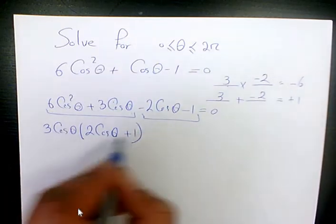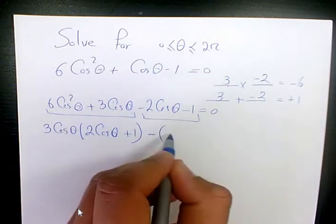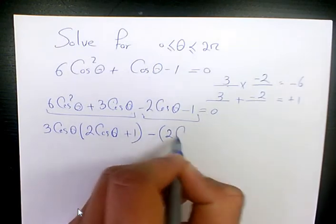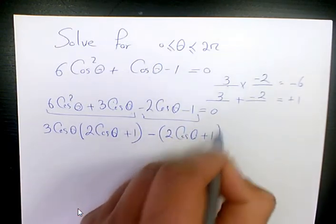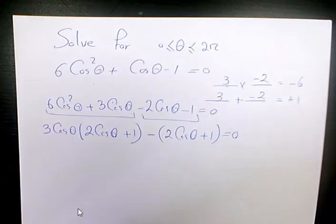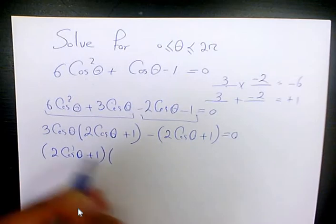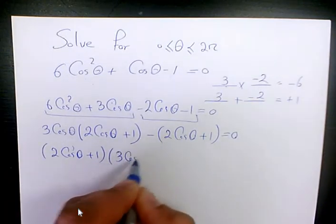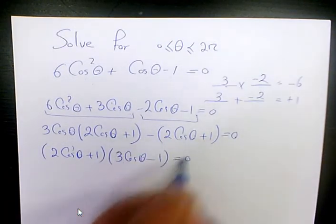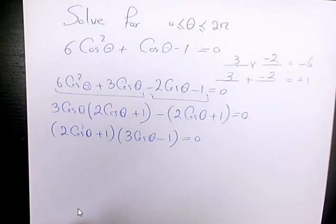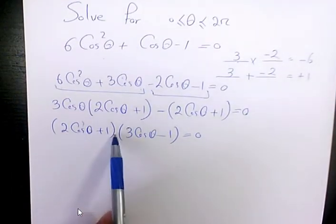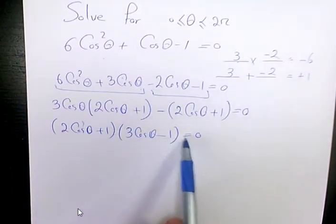And here I need to take something like that out, so I factor out negative 1. So it's going to be 2 cosine theta plus 1 equals 0. Now I factor out 2 cosine theta plus 1, and here I have 3 cosine theta minus 1 equals 0.